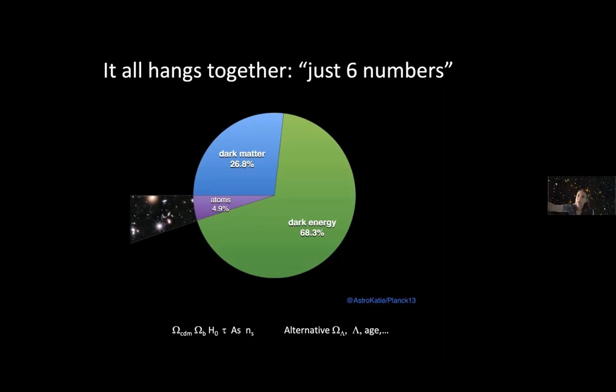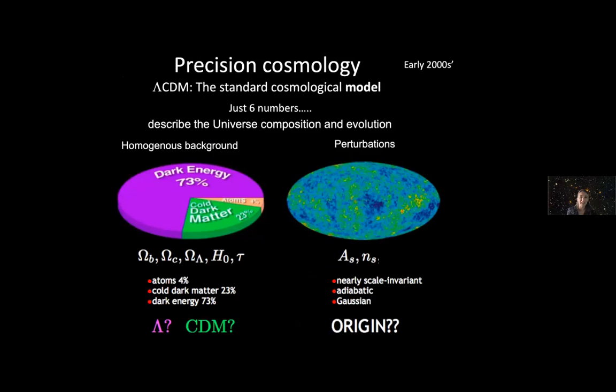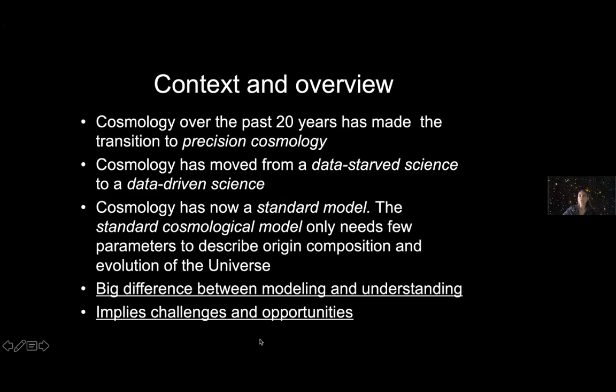This cosmic pie has been known since the early year 2000. This is a slide from after the WMAP result. Precision cosmology, we have a Lambda CDM model is the standard cosmological model. Six numbers describe the universe composition and evolution. But this leaves some big questions open: What is lambda? What is cold dark matter? And what are the origin of the primordial perturbations?